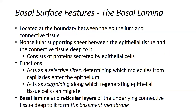The basal surface of the cell is typically the boundary between the underlying connective tissue and the epithelial cells. Non-cellular supporting sheets are the extracellular material that anchor this tissue to the underlying connective tissue. This consists of proteins secreted by the cell, and it also functions as a selective barrier protecting the tissue from injury — allowing only what the epithelial cells need to be transported in, while keeping other things, such as substances from the underlying blood vessels and capillaries, out.